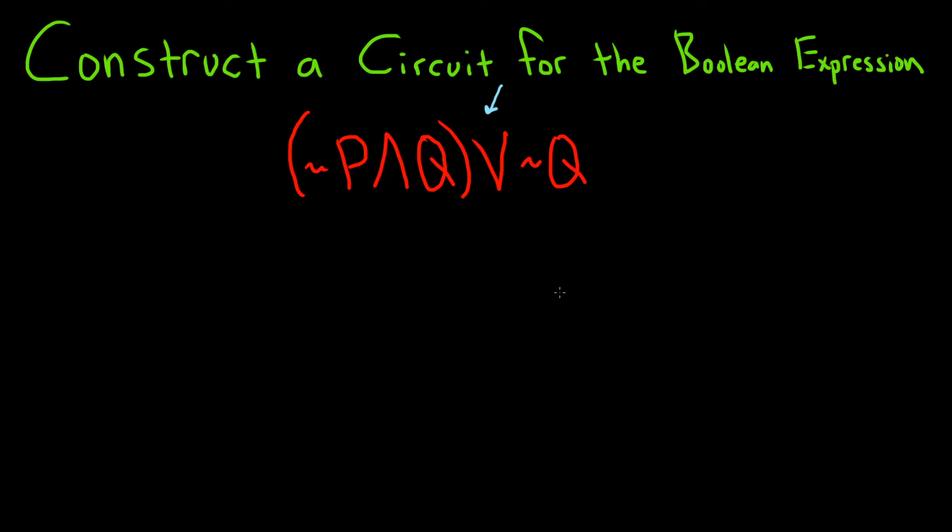So we're going to start with an OR gate and we're going to put that at the end. So here is our OR gate. Boom, there it is. I'm just going to draw a little line here and I'll write OR. And the OR gate has two inputs. It has this expression here and this expression here.